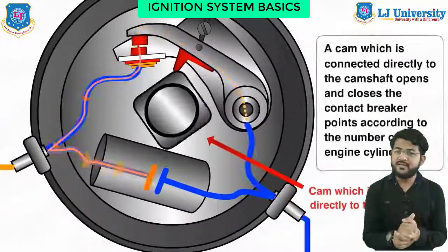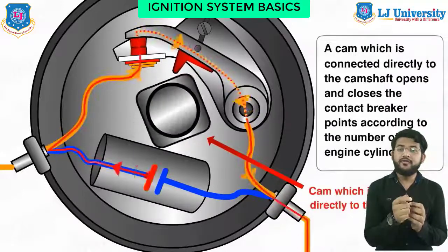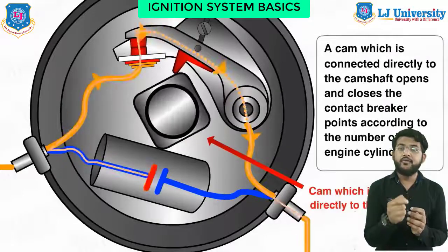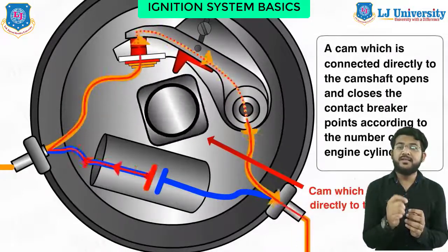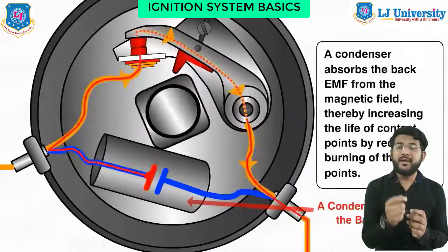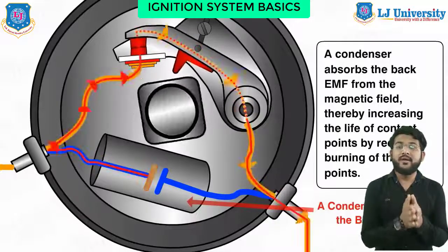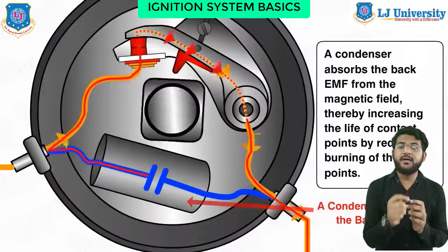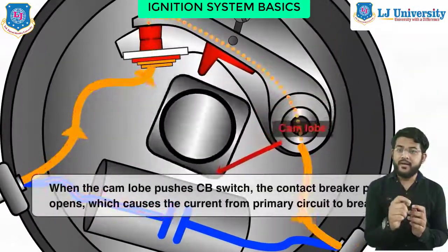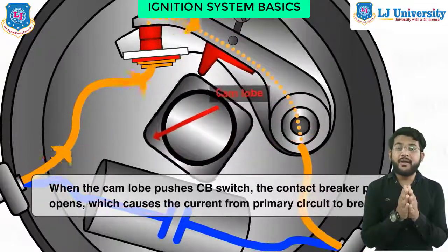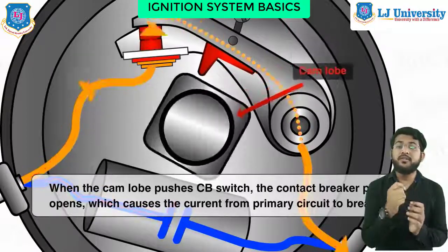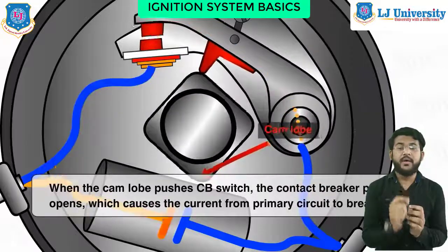In the case of internal combustion engines, that is IC engines, combustion of air and fuel takes place inside the engine cylinder. The products of combustion expand to produce reciprocating motion of the piston. This reciprocating motion is in turn converted into rotary motion of the crankshaft through the connecting rod and crank, and that rotary motion is used to drive generators for generating power.